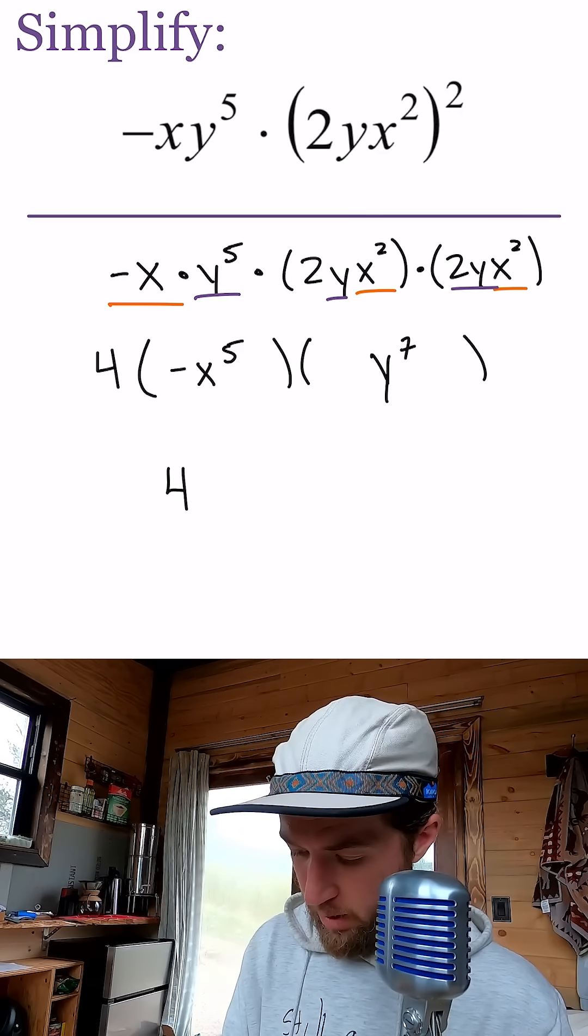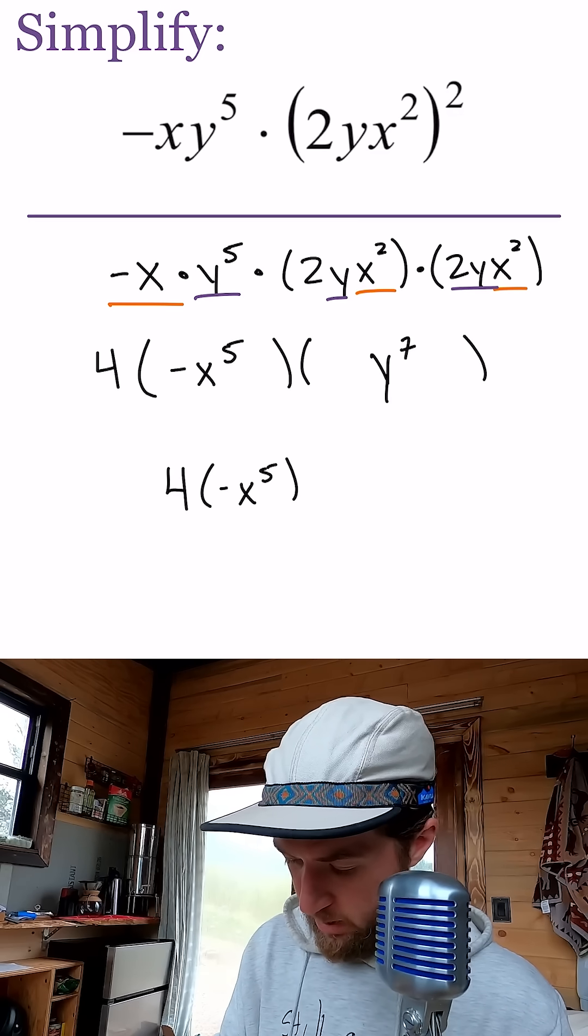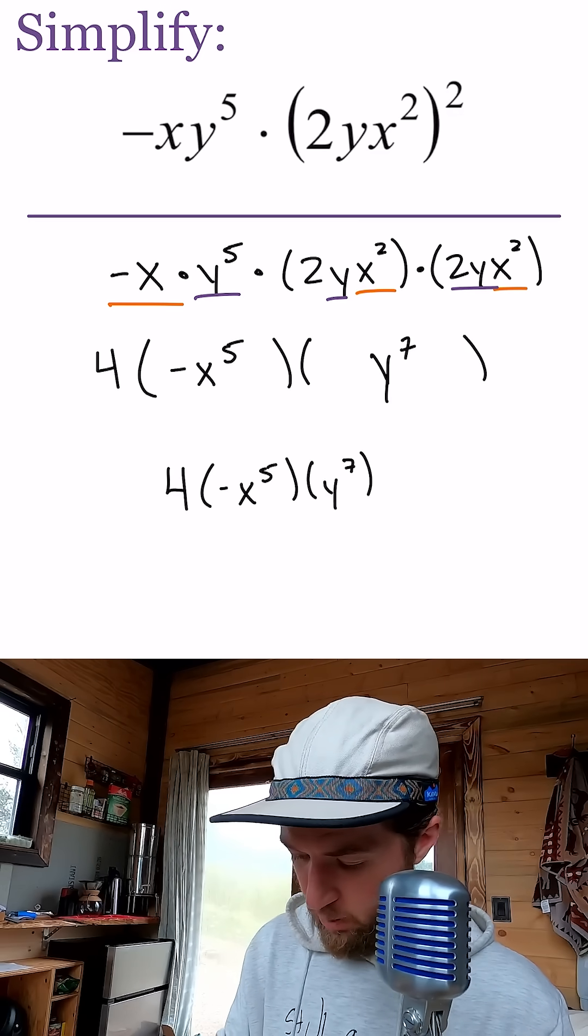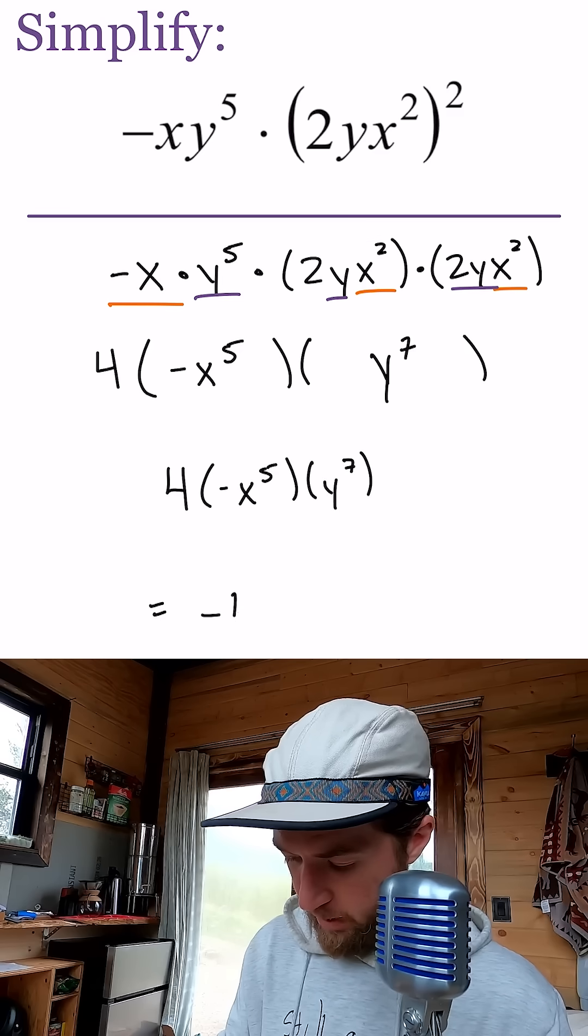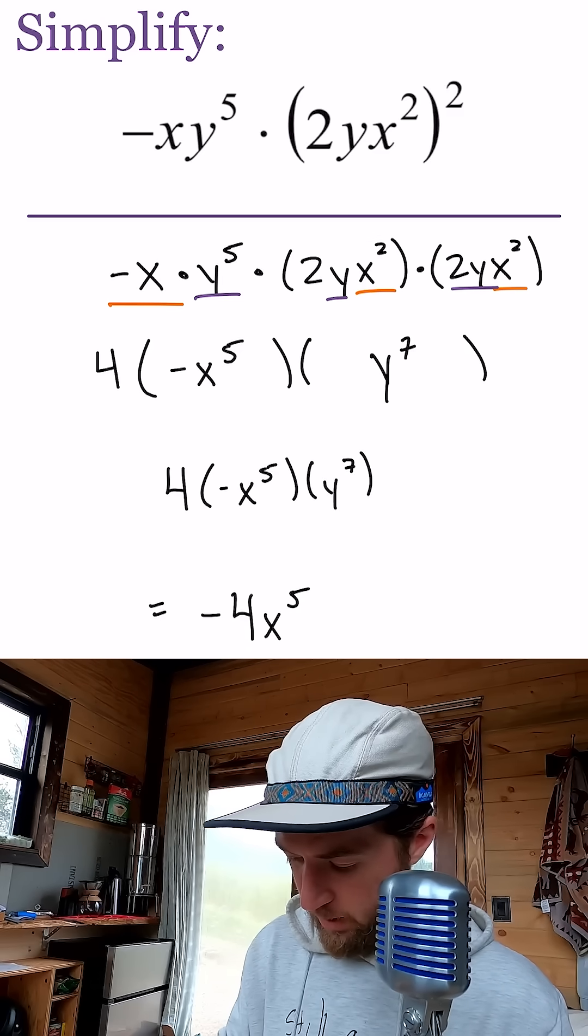So we now have four times negative x to the fifth times y to the seventh, or in slightly simpler terms, negative 4x to the 5th y to the 7th.